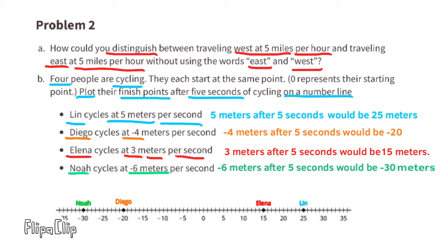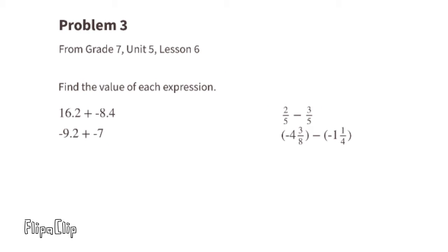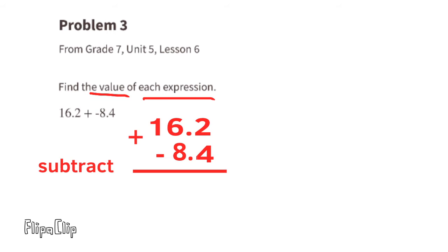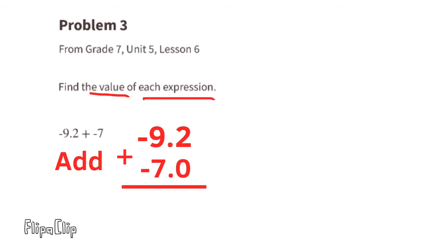Problem 3 from 7th grade Unit 5 Lesson 6: Find the value of each expression. 16.2 plus negative 8.4 is the same as 16.2 minus 8.4, and the value of this expression is 7.8, or seven and eight tenths.